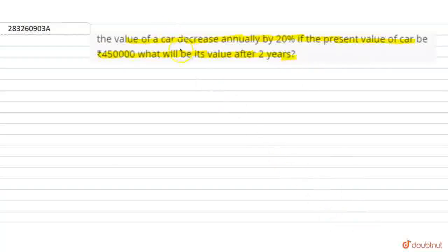What is the question asking? The value of the car decreases by 20% every year. If the present value is 450,000, and it decreases 20% every year, what will be the value of the car after 2 years?